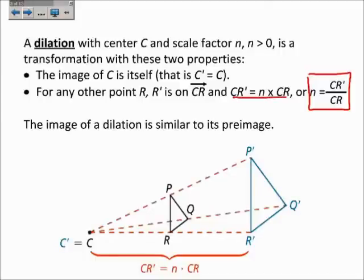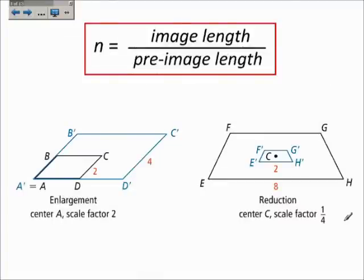Also, the image of a dilation is similar — mathematically similar — to its pre-image. Looking at that same formula, n is equal to CR' over CR, or in more general terms, n is equal to an image length divided by a pre-image length. Just so you understand that idea, I've given two examples. Here, the blue figure has primes on it, so that must be the image.